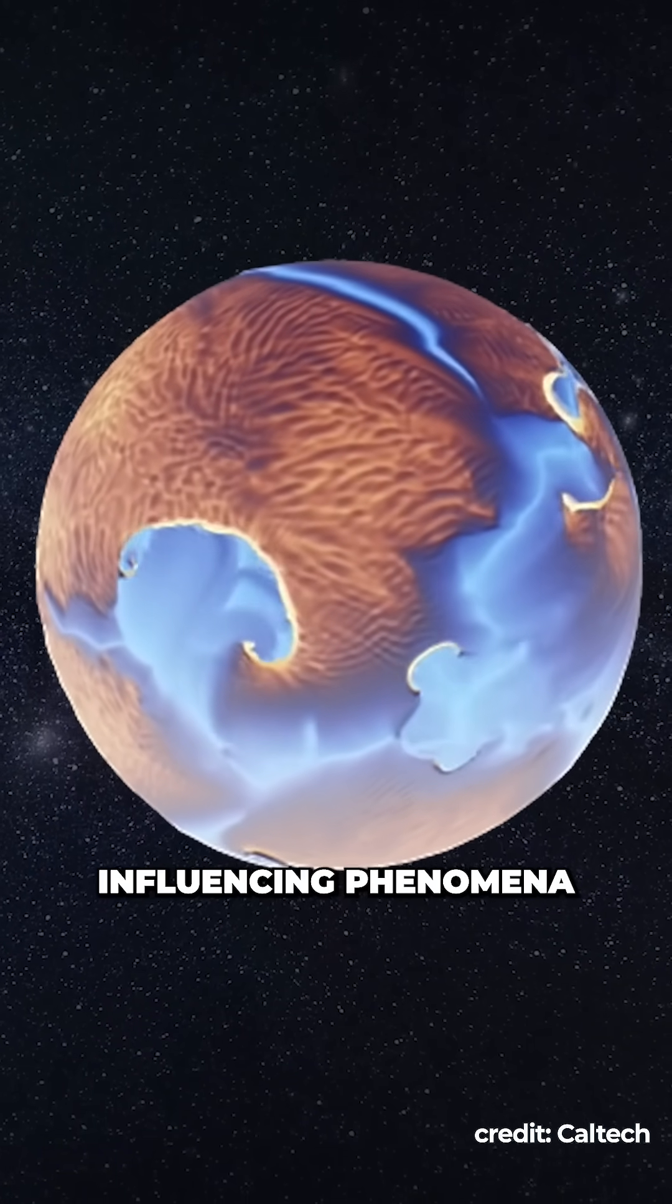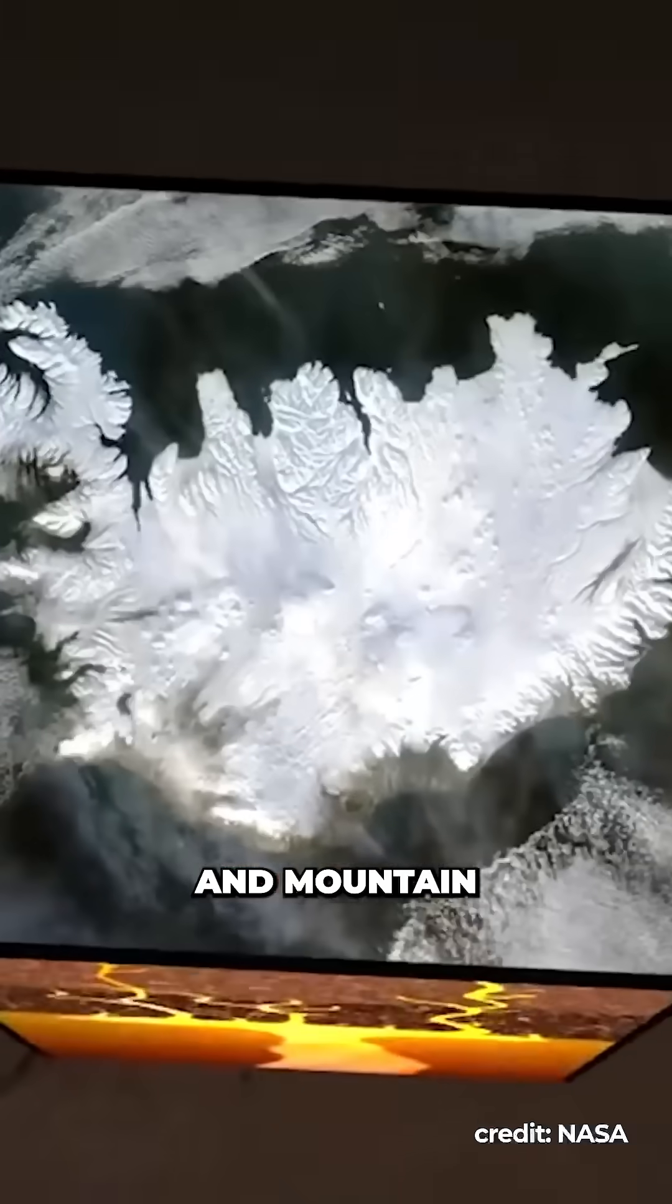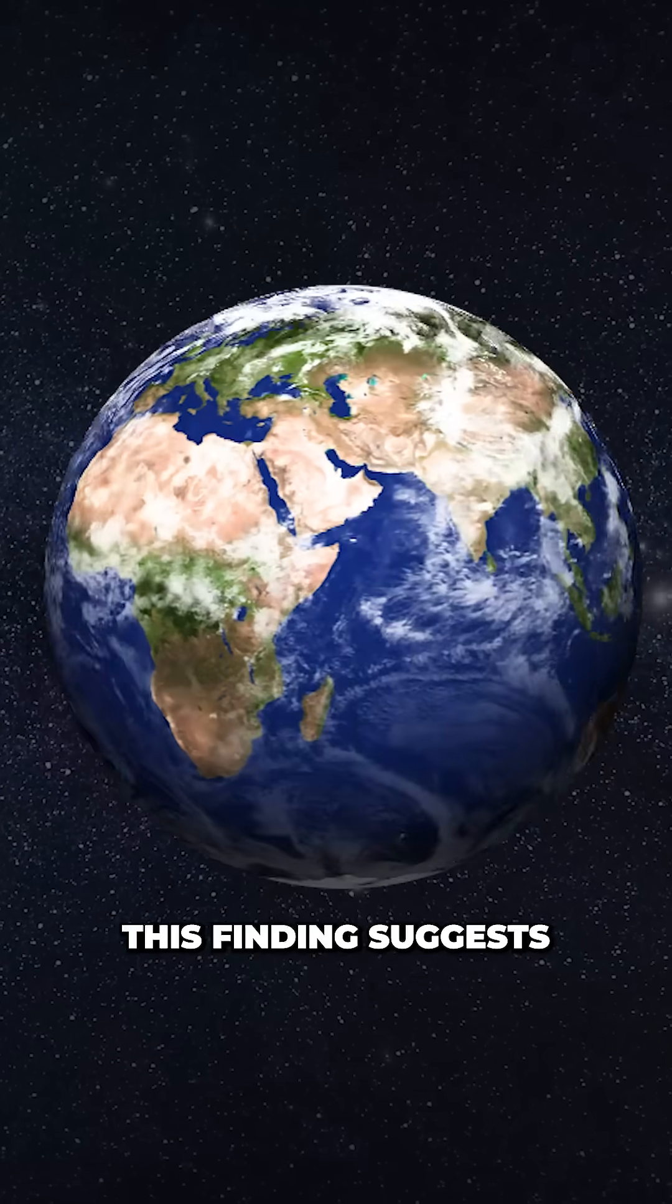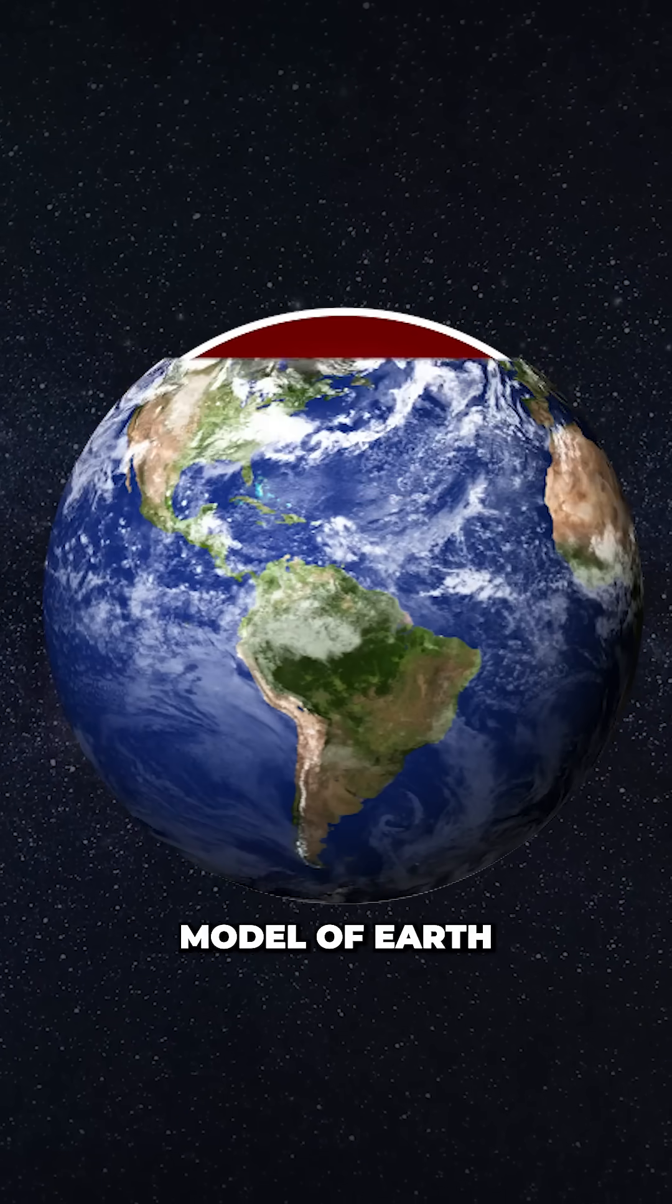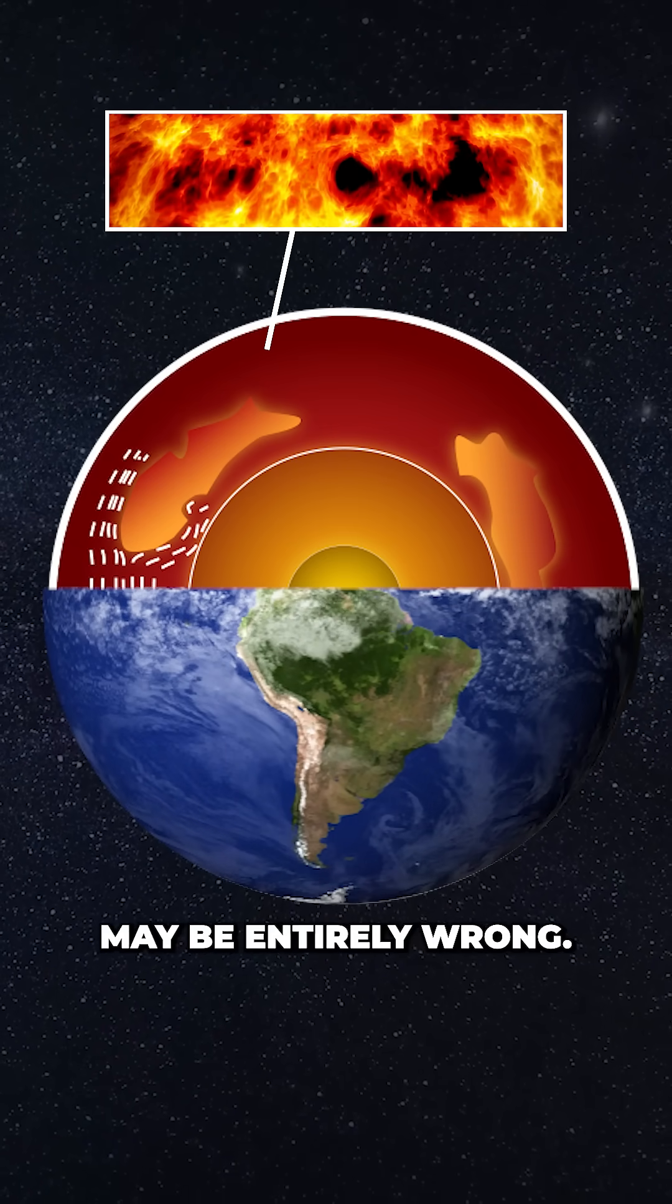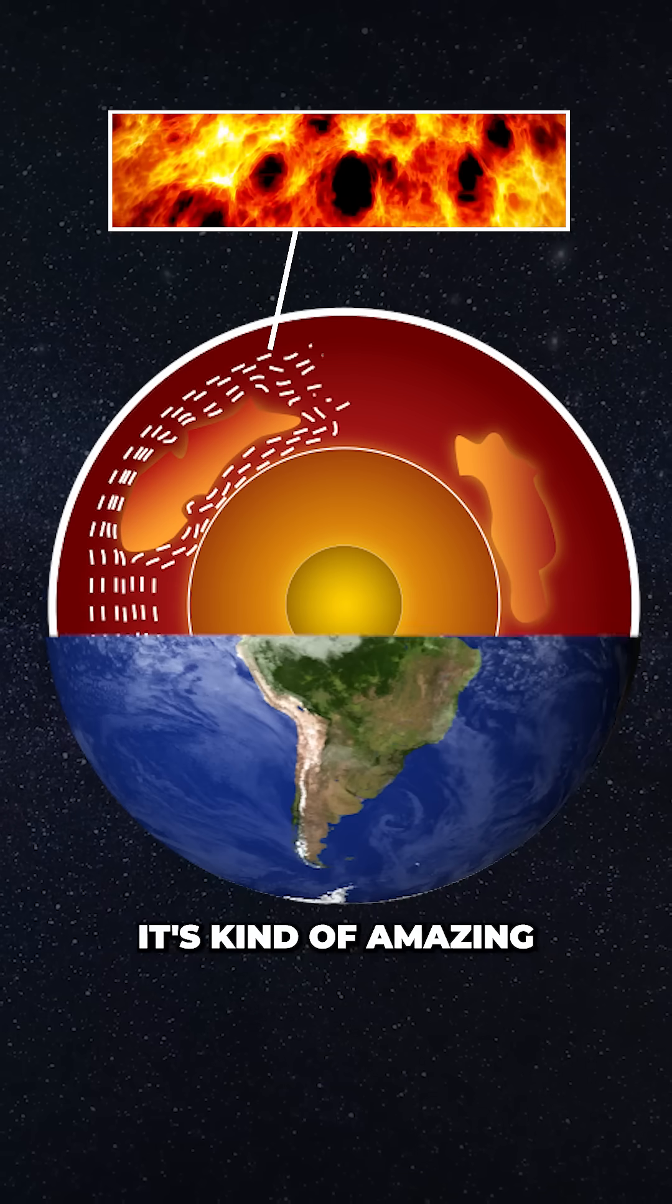with mantle plumes influencing phenomena like volcanism and mountain formation. More importantly, this finding suggests that our model of Earth having a well-mixed, fast-moving mantle may be entirely wrong. It's kind of amazing what we are still finding out about the ground beneath our feet.